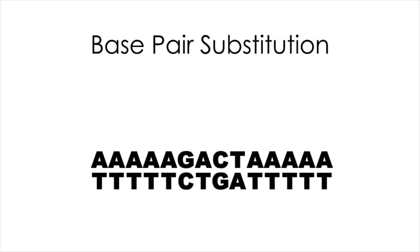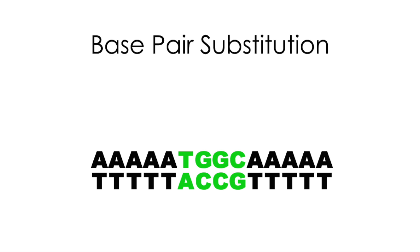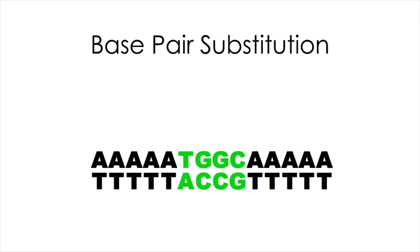Base pair substitution is where one or more base pairs are removed from the DNA double helix and replaced by an equal amount of base pairs, however potentially different base pairs. This will not cause frameshift mutations, nor will it cause mismatched pairs; however, it will change the sequence within that gene.